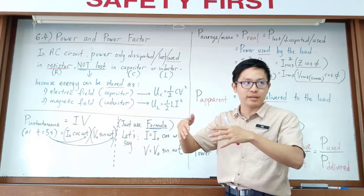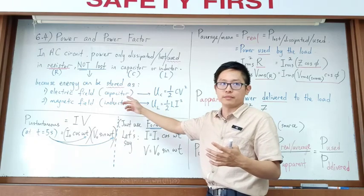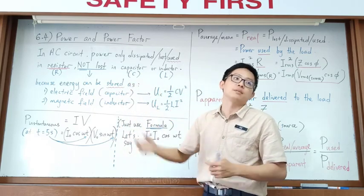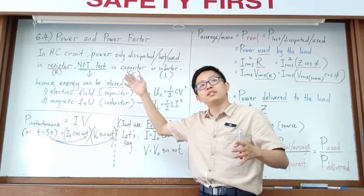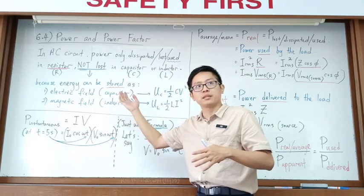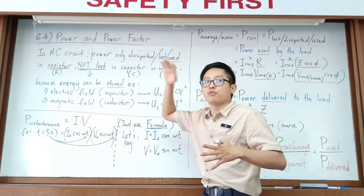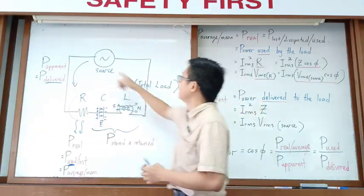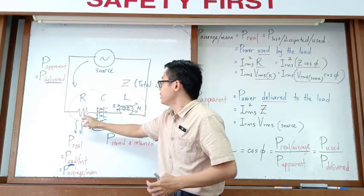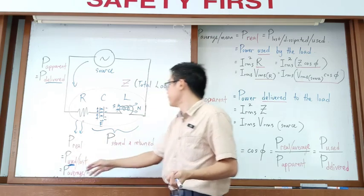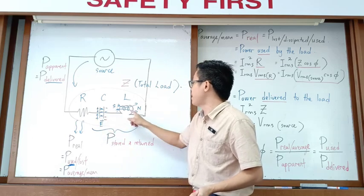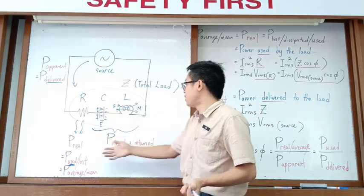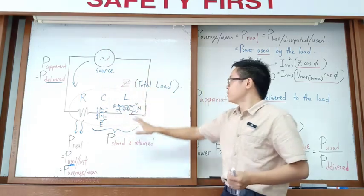Power is not used inside capacitors or inductors — it is stored and returned back to the source. For a capacitor, during charging, energy is stored; during discharging, the energy is returned back to the source. So there is no energy loss in capacitors or inductors.